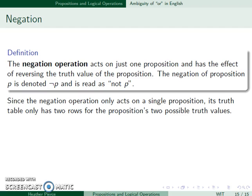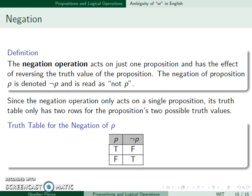It only acts on a single proposition, and its truth table only has two rows. If P is true, then not P is false. And if P is false, then not P is true.